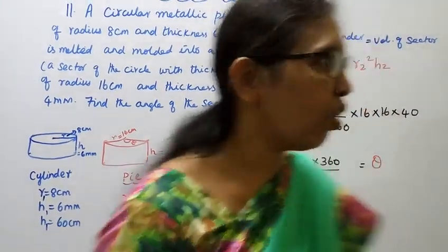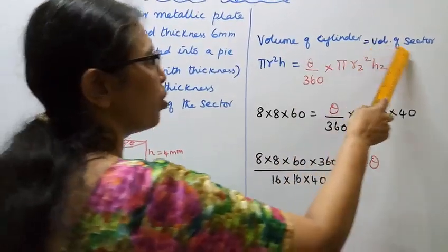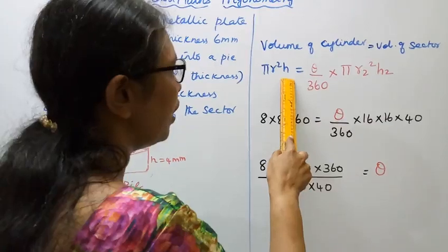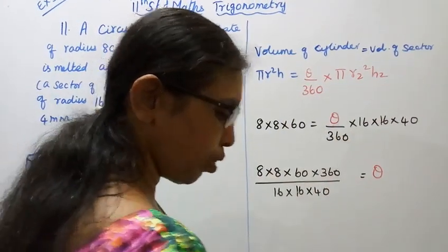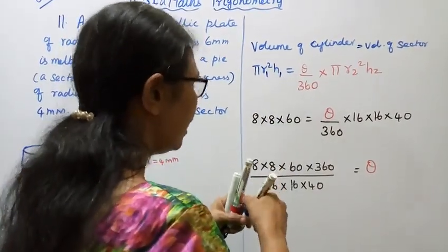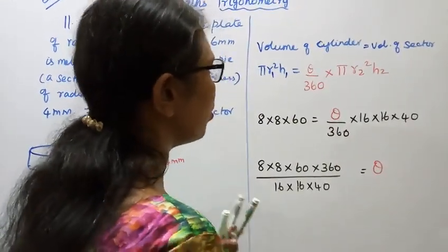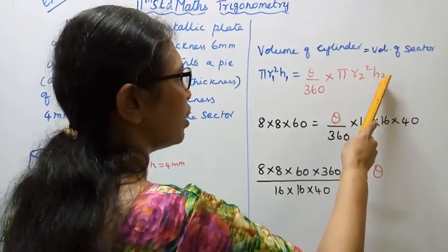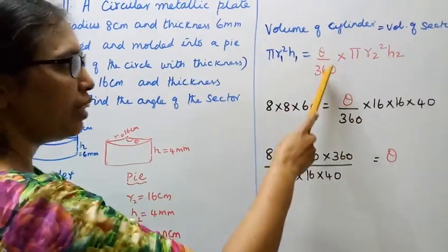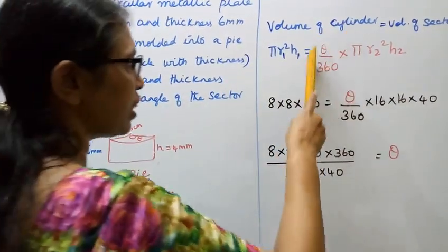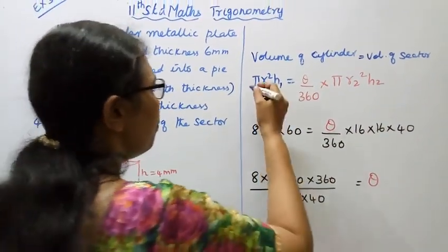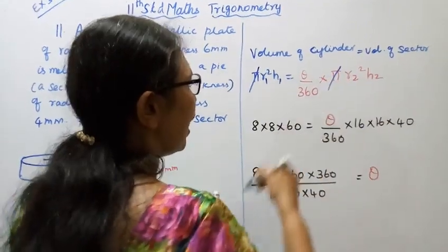Now for the sector, volume of sector. Volume of cylinder equals volume of sector. Pi R squared H equals theta by 360 times pi R squared H. For the sector, theta by 360 times area. You cancel pi.